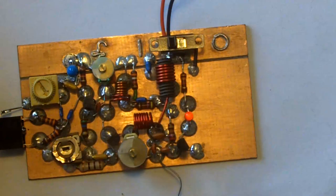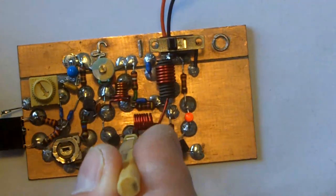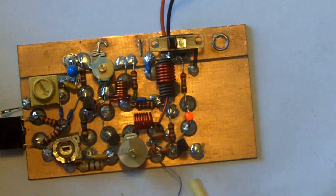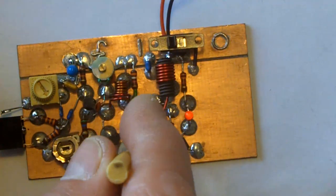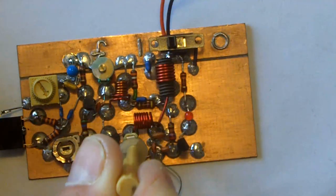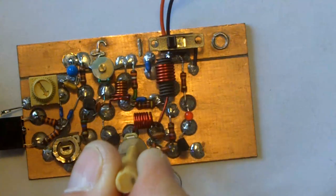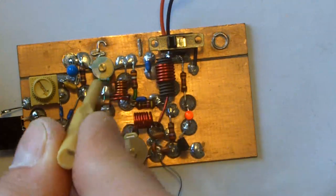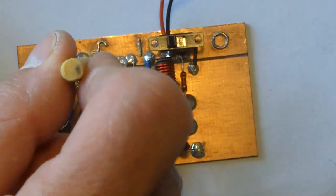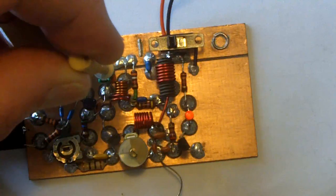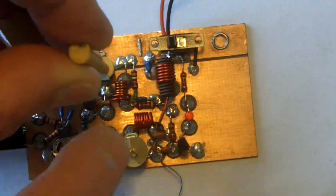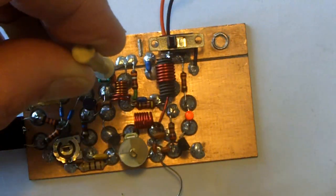That's the antenna tuner. All I'm doing is adjusting for maximum brilliance. I guess it's like we used to say, tune in for maximum smoke. The actual frequency is adjusted with this pot.